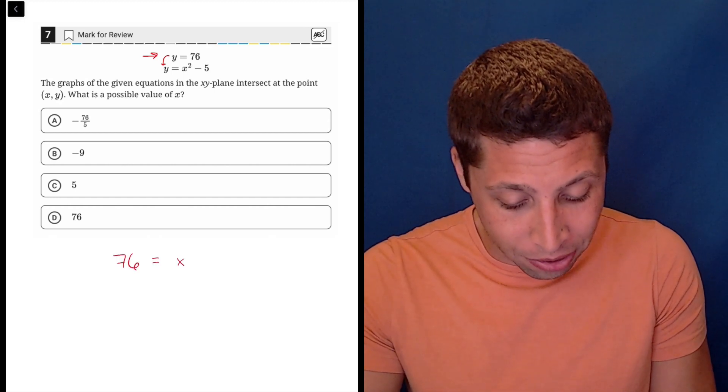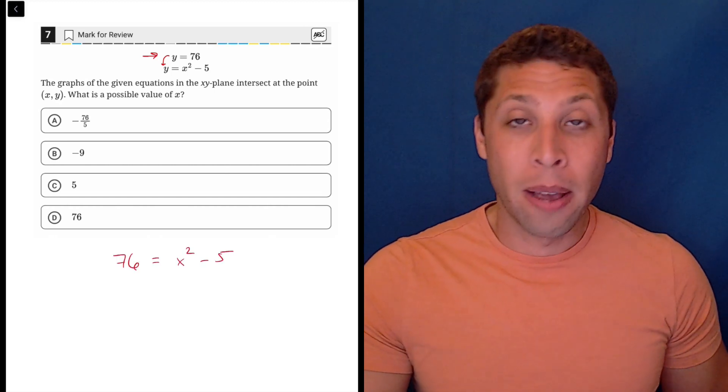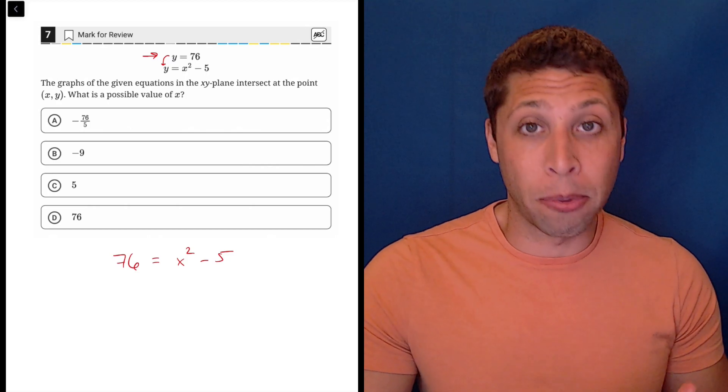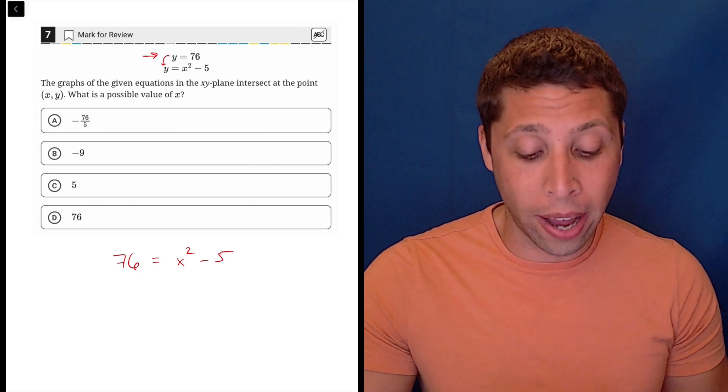Very quickly, it's just solve for X. X squared minus five is the only equation and now we've substituted in for 76 or Y as 76.